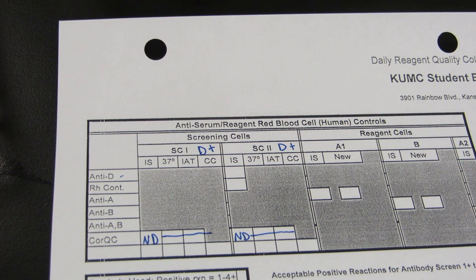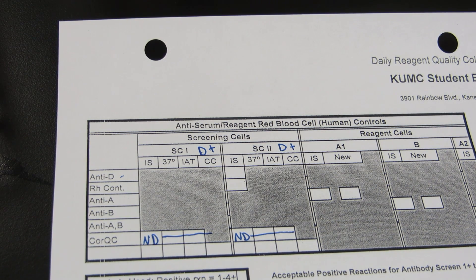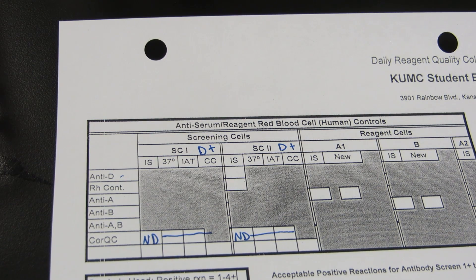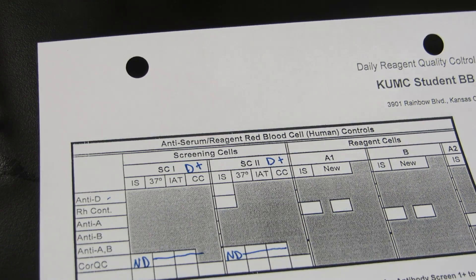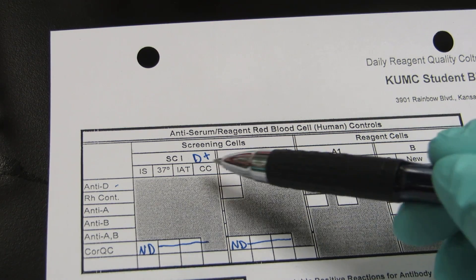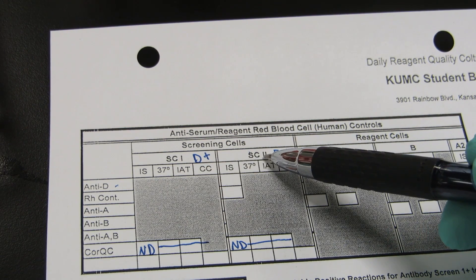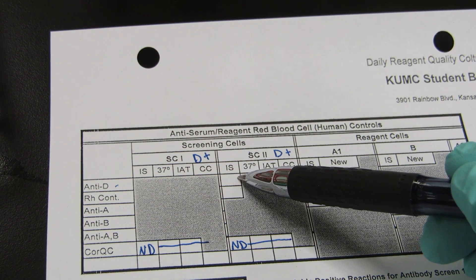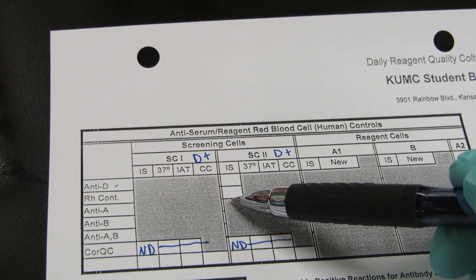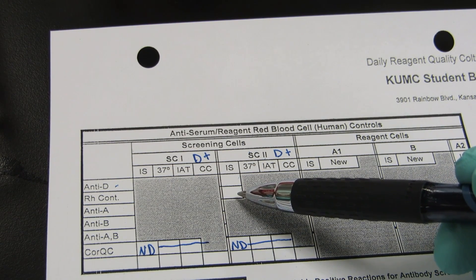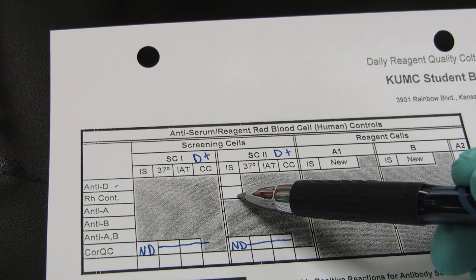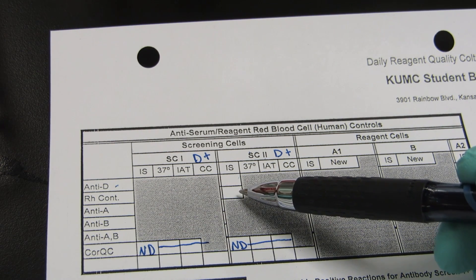Remember, QC does not involve patient material. In this case you know both components — the antibody and the antigen — so you should know what to expect for the reaction. If I put anti-D in a tube and a cell containing the D antigen, I expect this to be positive. If I use an RH control, which is a negative control with no antibodies in it, then I expect this result to be negative — there's no anti-D in it.